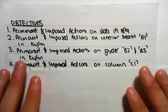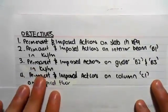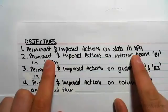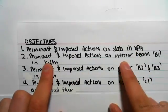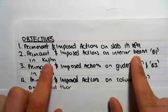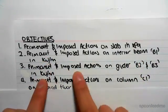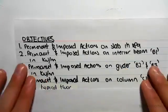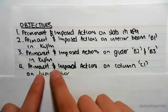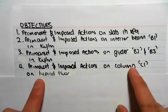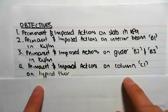Essentially we're calculating very similar things to the previous one: permanent and imposed actions in the slab, permanent and imposed actions in interior beam B1, permanent and imposed actions on girder B2 and B3, and permanent and imposed actions on column C1 on a typical floor.